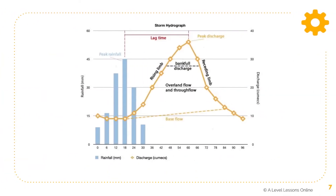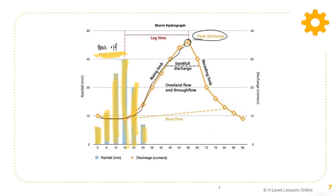Looking at a storm hydrograph diagram, rainfall is always denoted by the bar chart. As you can see, the peak rainfall is marked at a specific point. Lag time is measured from the peak rainfall to the peak discharge, which occurs at a later point on the curve. The curve represents everything within the river — the amount of discharge over time.